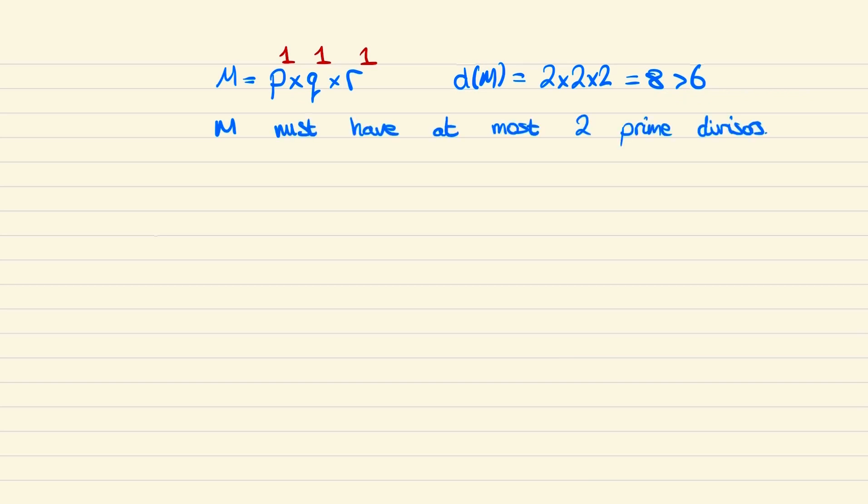So for M to have six divisors, it could be either p to the power of 5, or p² times q, where p and q will be some prime numbers.